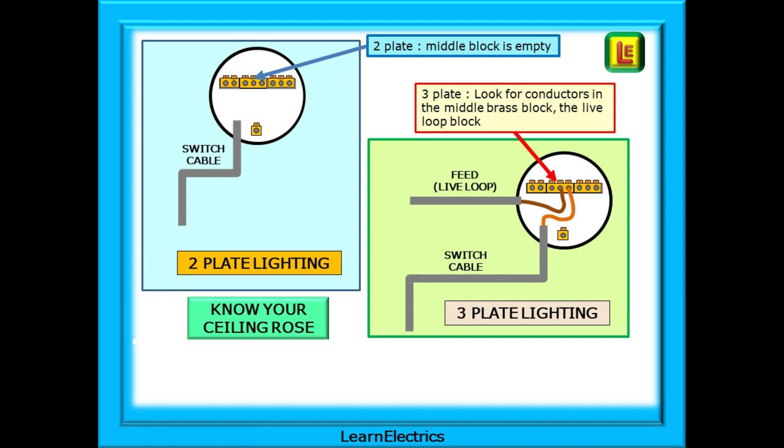Whether it's twin and earth or singles, take a look at the middle brass block, the live loop block. In a two-plate system this middle block should be empty, whilst in a three-plate system there will be at least two conductors in this middle block.